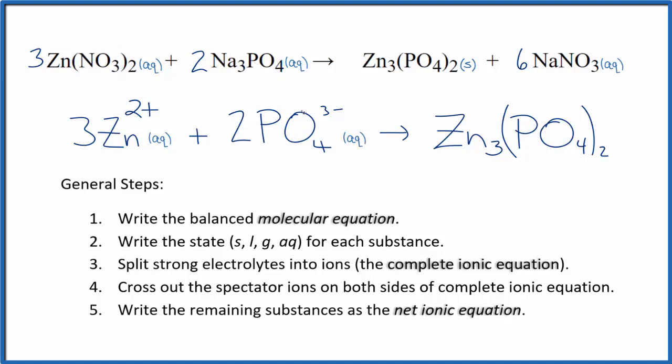Note that charge is balanced. Three times two plus, that's six plus. Two times three minus, that's six minus. This all adds up to zero. Over here, neutral compound charge, that's zero as well. If you count the atoms up, they're balanced too. This is Dr. B with the balanced net ionic equation for zinc nitrate plus sodium phosphate. Thanks for watching.